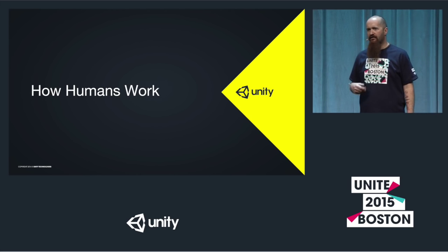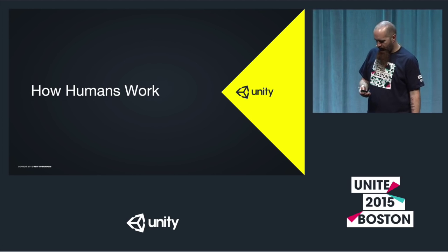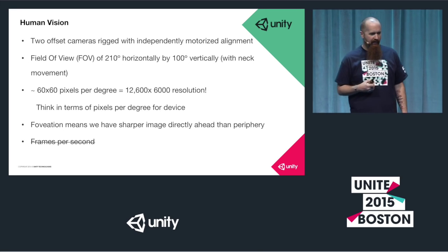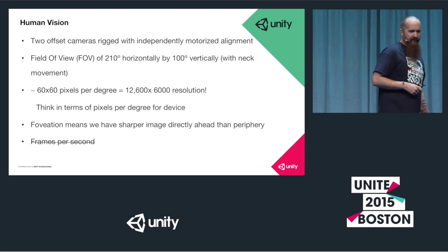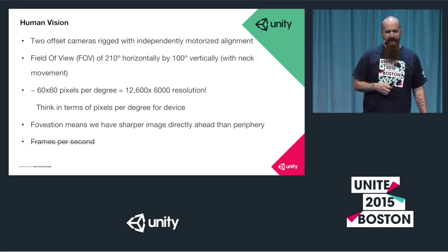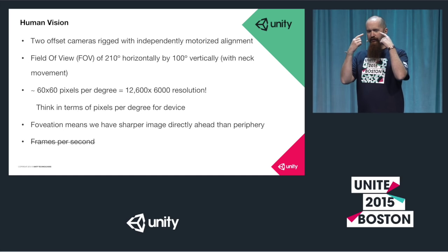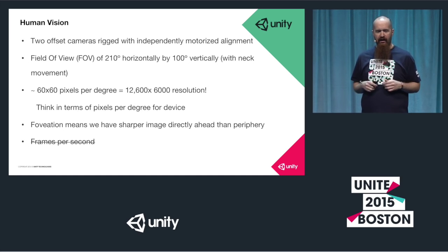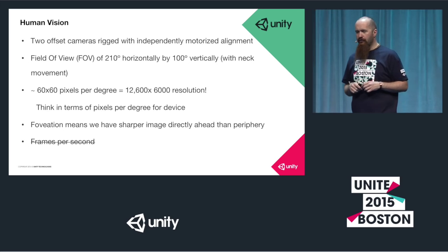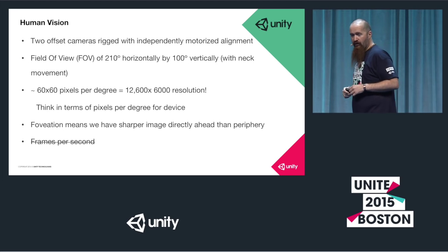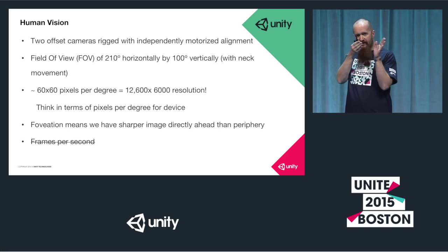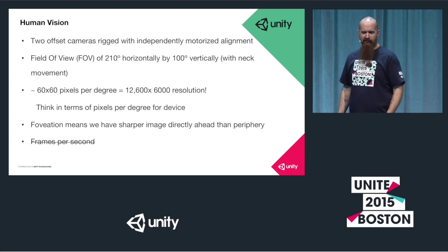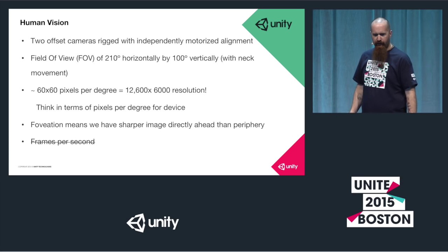As I see it, humans are two offset cameras rigged with an independent motorized alignment system. They can turn their head to gain a greater field of view, look up and down, and their eyes work in sync - they don't tend to look in different directions. If they do, you might have a neurological problem.